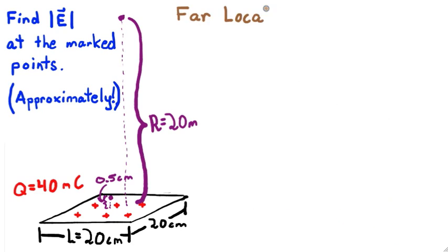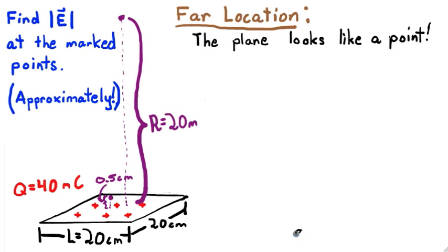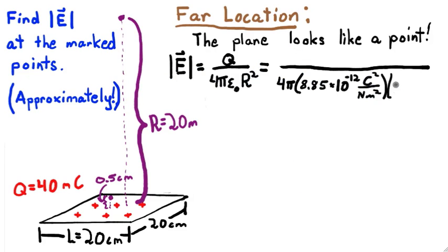Now let's go far away. From this distance, the plane looks like a point. Here's a diagram closer to scale emphasizing this. We can reasonably use the point source formula to find the electric field in this case. We substitute our numerical values and start doing unit cancellations like before.